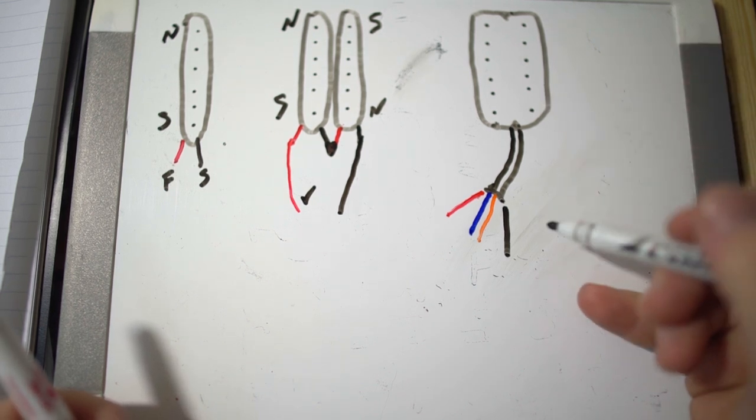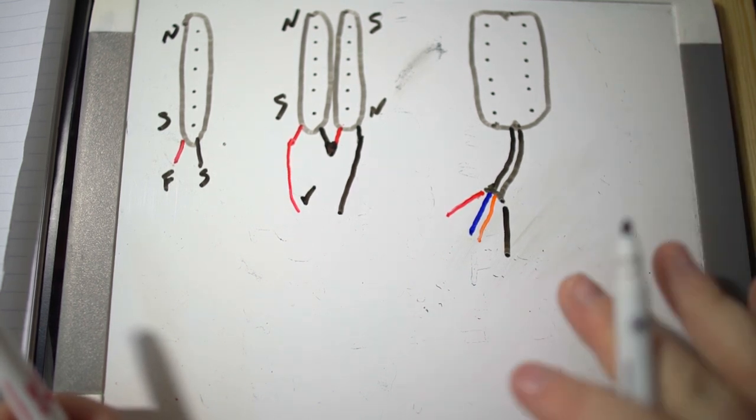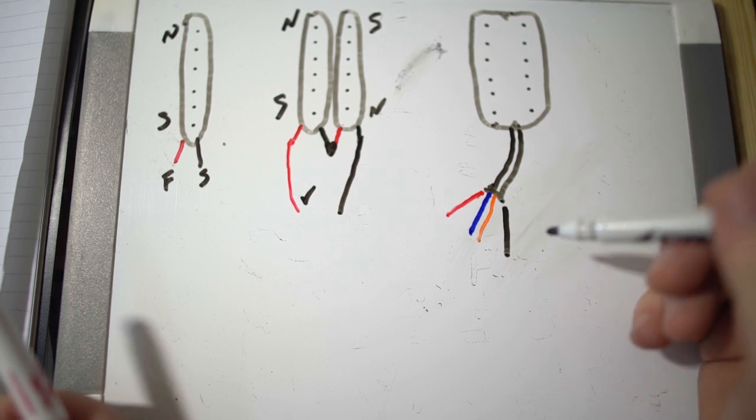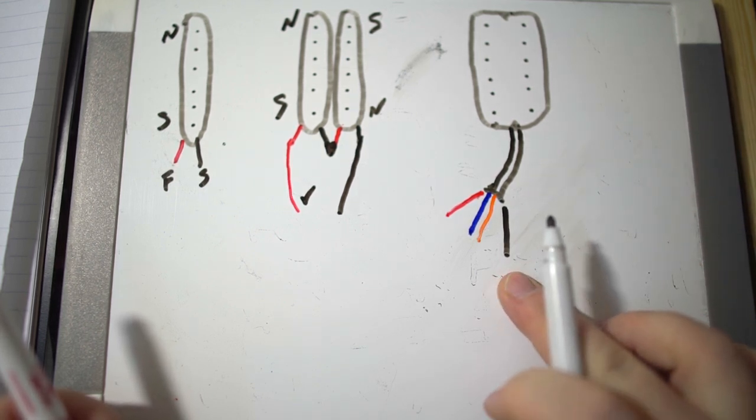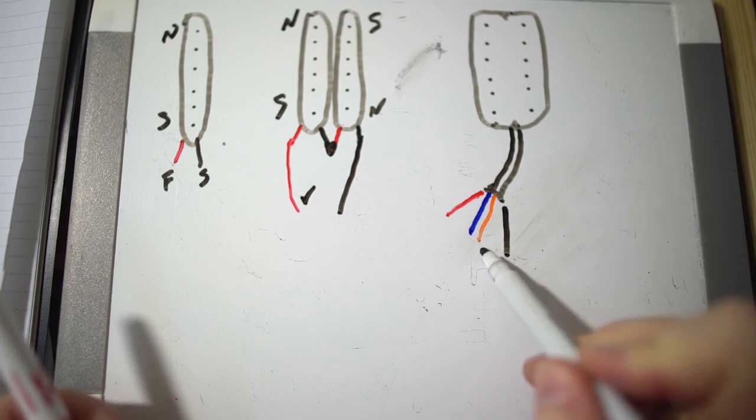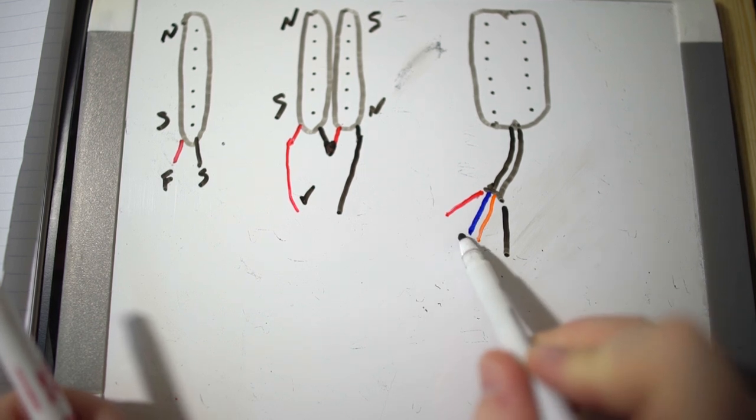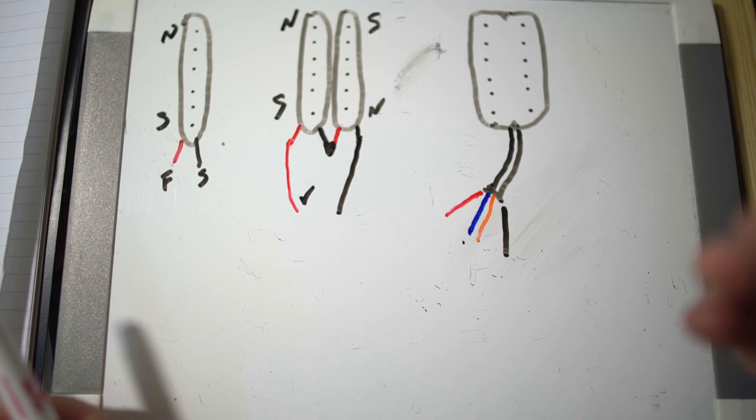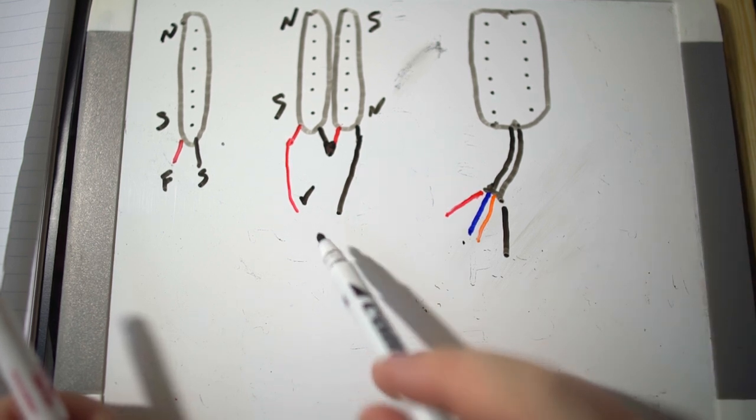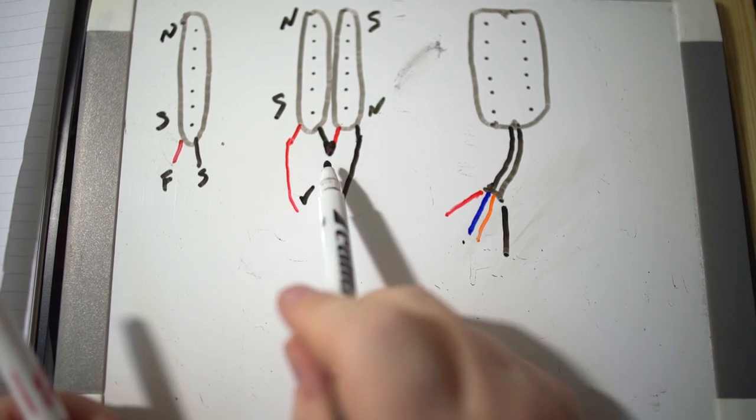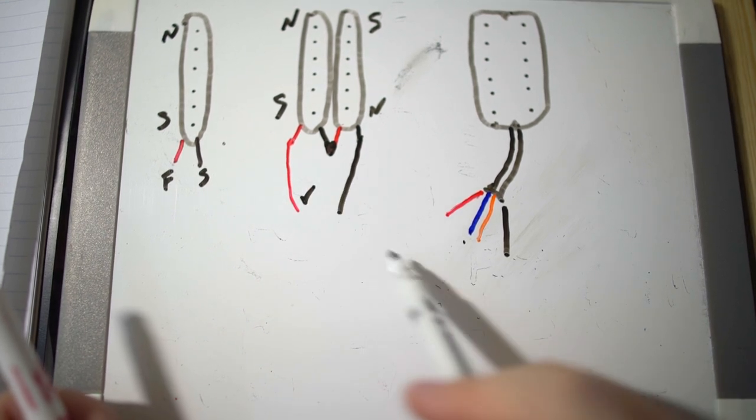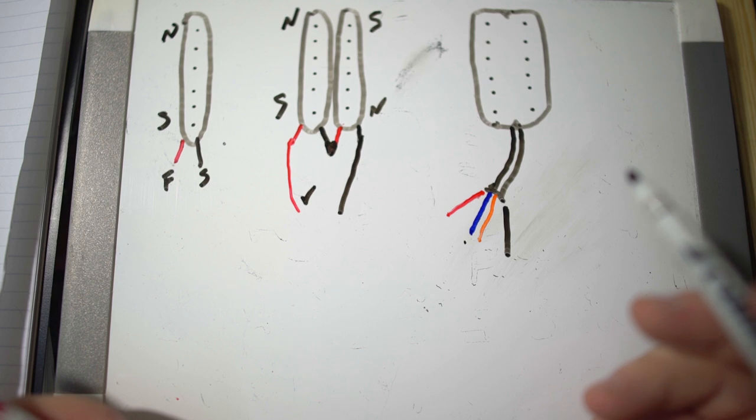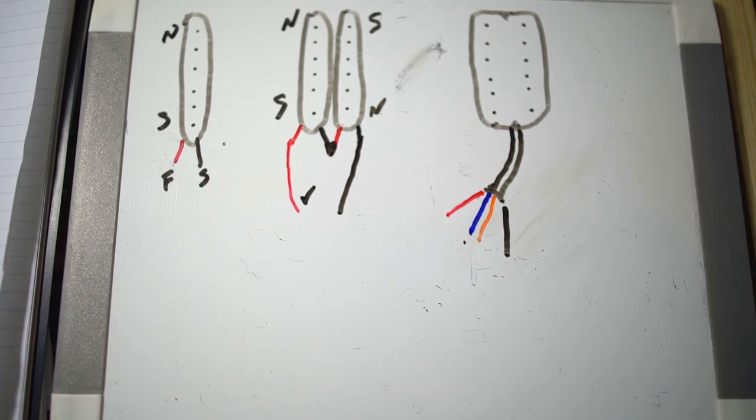When you have a humbucker that has four leads, all they've done is give you a way to access the start and finish of each coil. You're going to have your start of one coil, your finish of that coil, your start of the next coil, and your finish or hot lead out of that next coil. If your guitar only had two leads and you have a four-lead pickup, all you need to do is do what they used to do at the factory. Connect the finish of one coil to the start of the next.